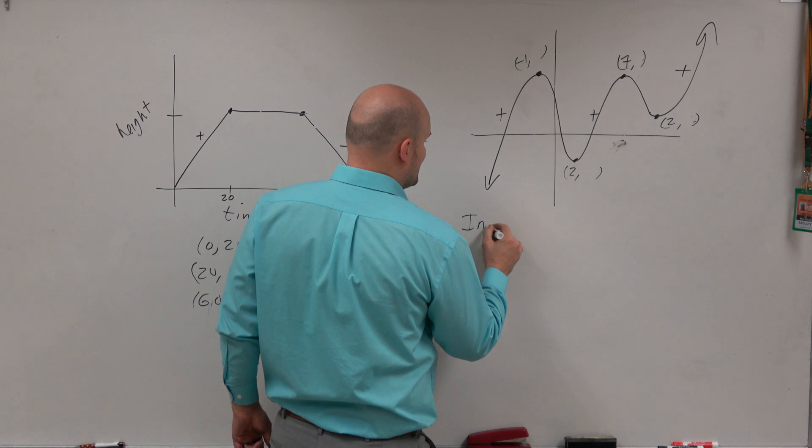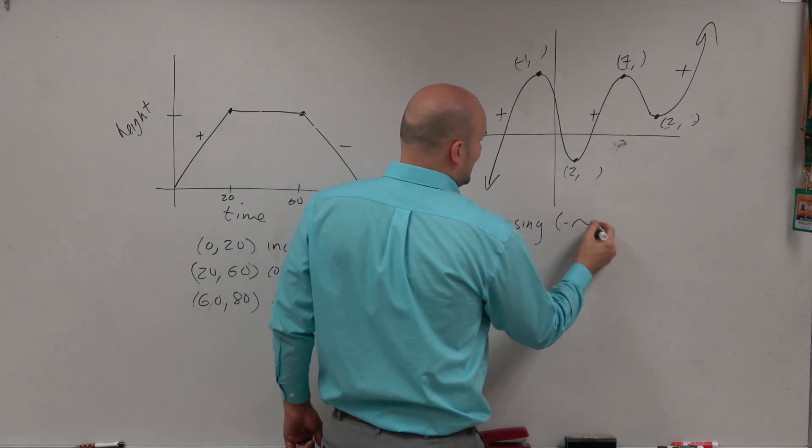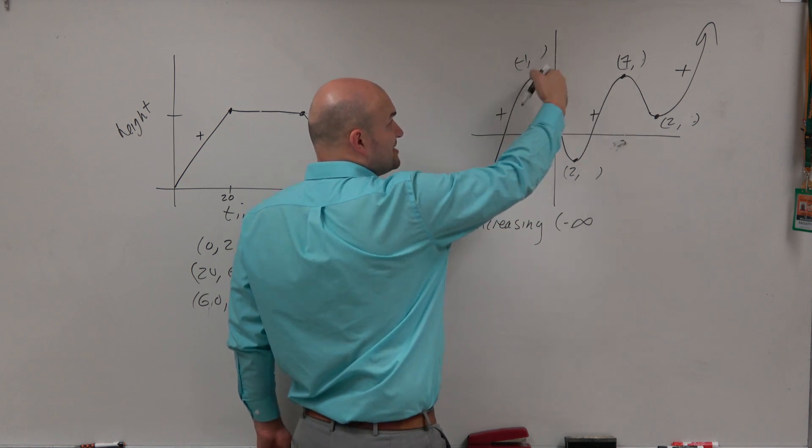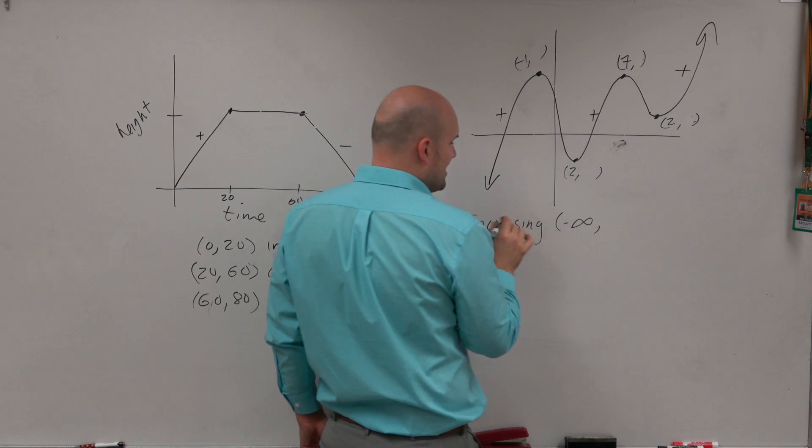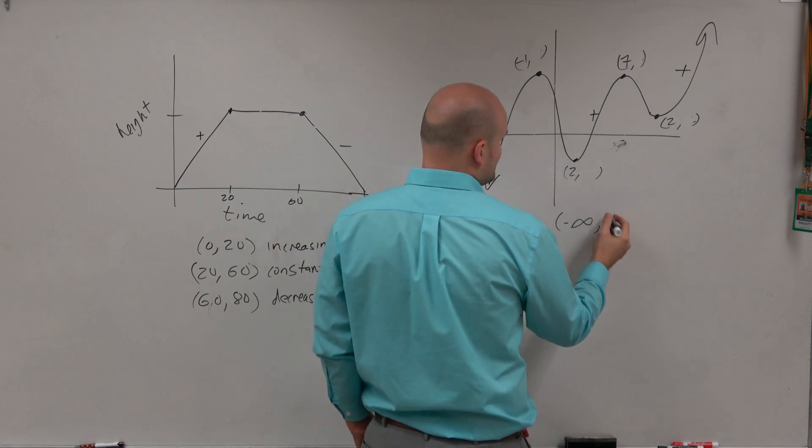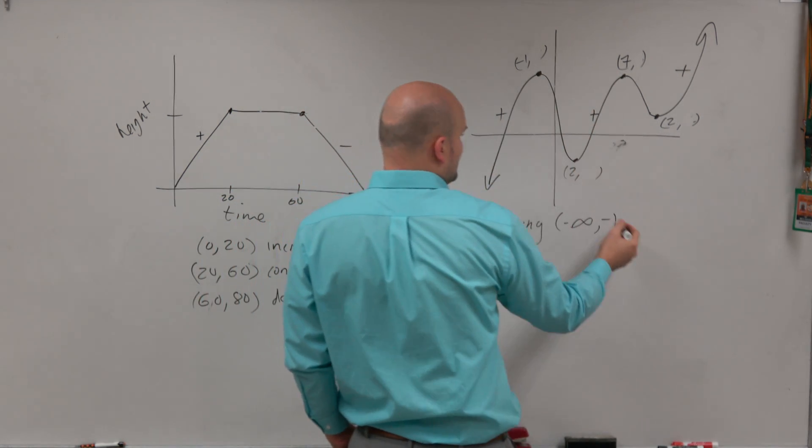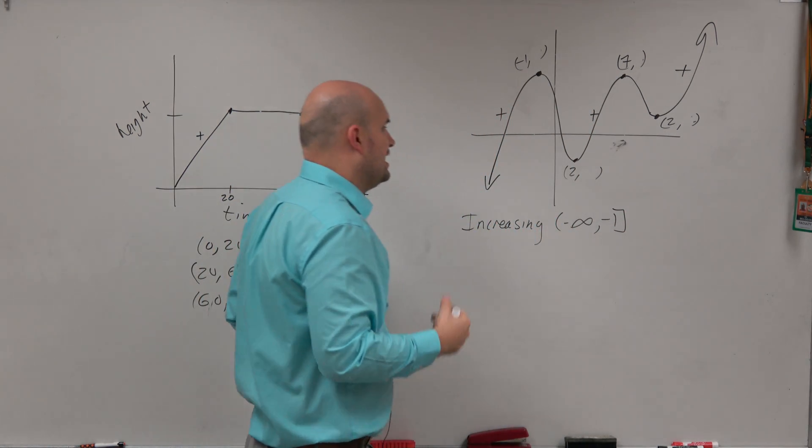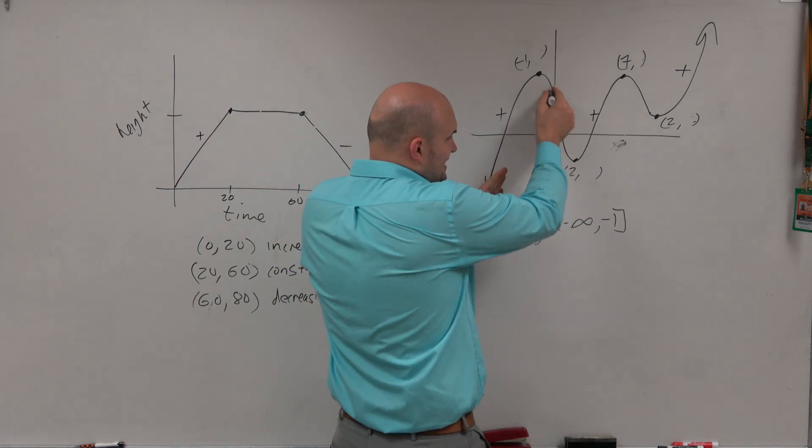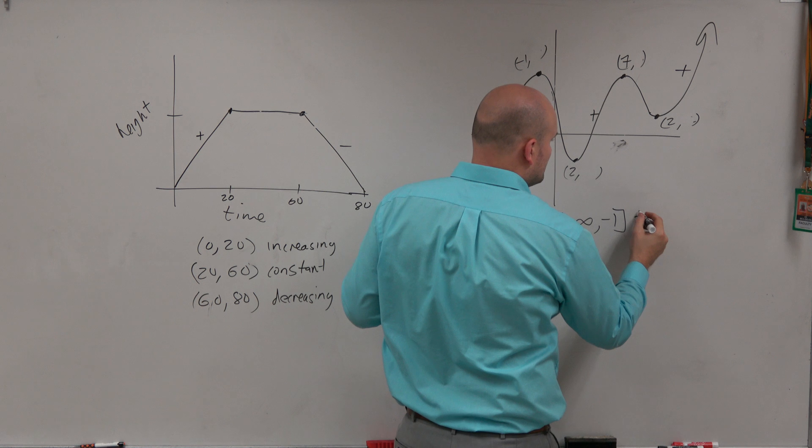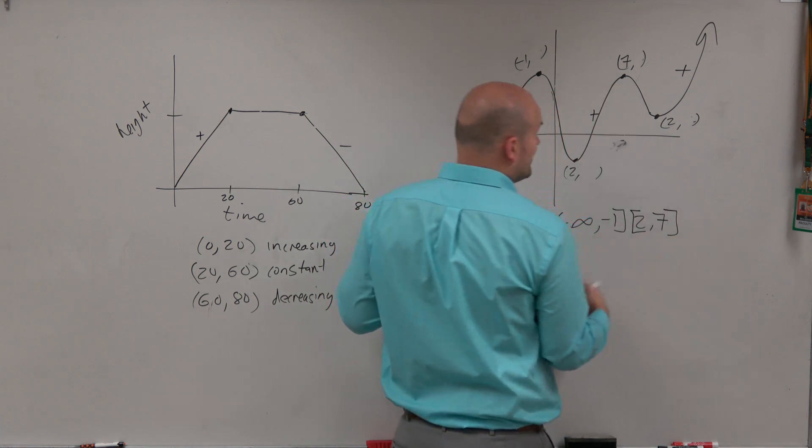So I'm going to say the graph is increasing from the x interval of negative infinity all the way to negative 1, because at negative 1 you can see that it starts to change into decreasing. So the graph is increasing from negative infinity to negative 1. It really depends on your instructor if you're using including or excluding points. In this case, I'll just use including points. Then it decreases all the way till 2. And then from 2 to 7, it is also increasing.